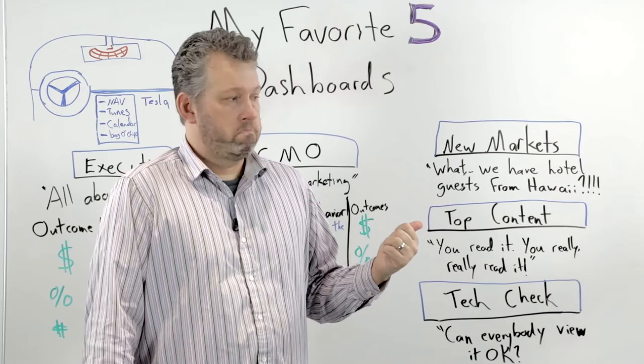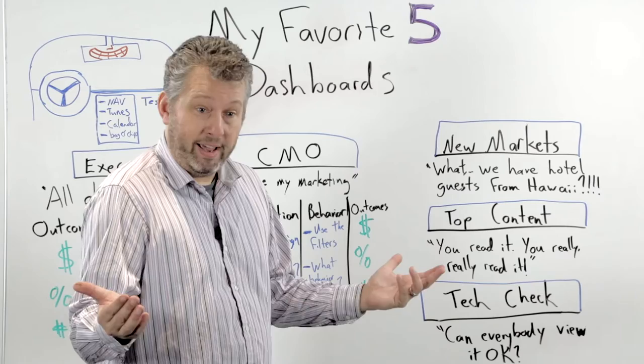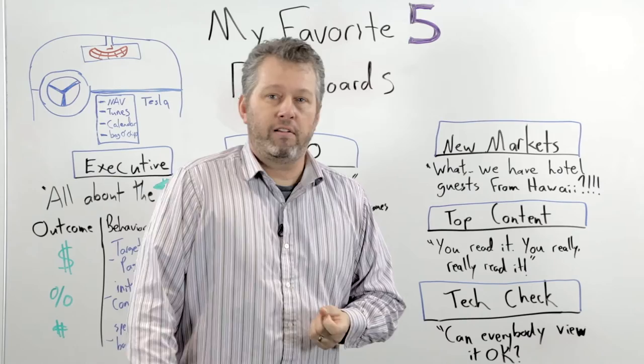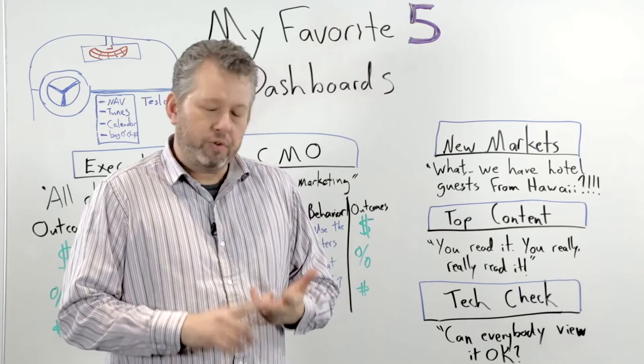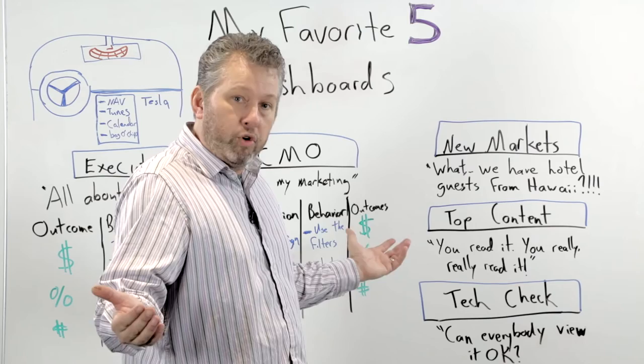They called me and said, 'Are we marketing to Hawaii?' I said no. And they said, 'According to the dashboard, we've had 193 room nights in the past two months.' We started reverse engineering that and found out that Allegiant Airlines suddenly had a direct flight from Honolulu to Spokane — and the hotel was two miles from the airport. They could then do paid search campaigns in Hawaii and try to connect with Allegiant to co-op some advertising and messaging. It would never have been discovered without that dashboard.